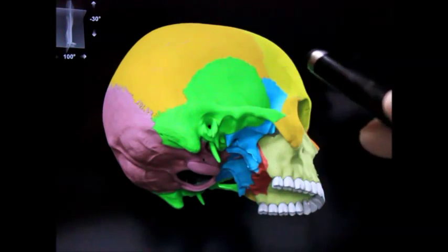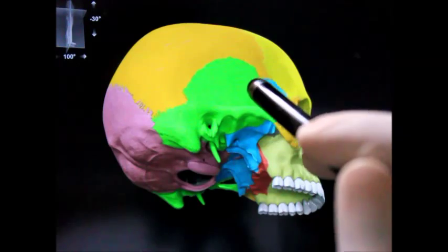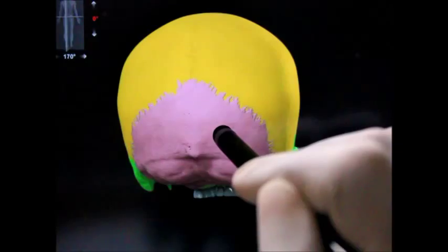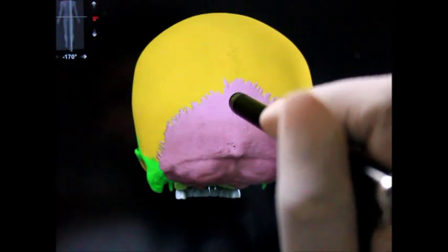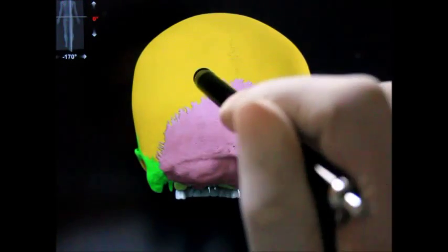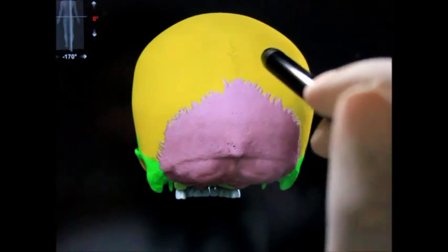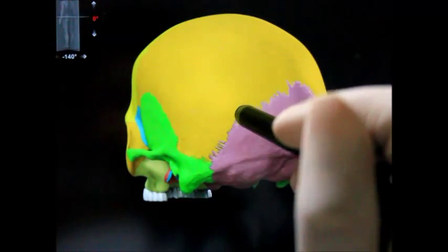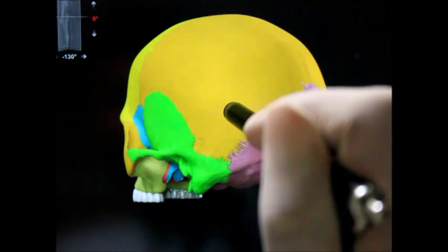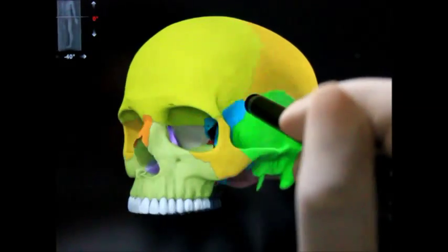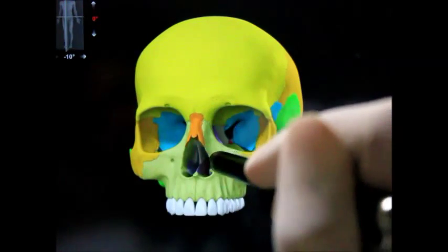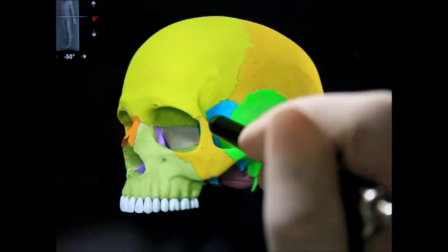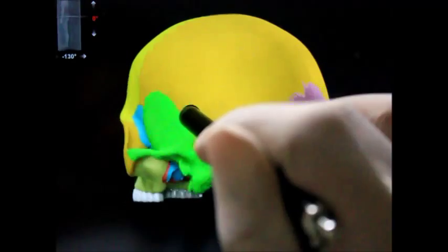The neurocranium has a skull cap and floor of cranial base that form the bone, and it is formed of eight bones: four singular bones centered on the midline. We can see the frontal, ethmoid bone, and here we have the sphenoid bone, then we have the occipital bone.